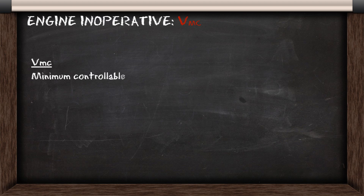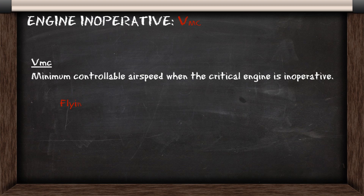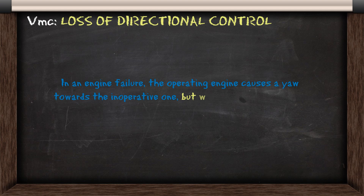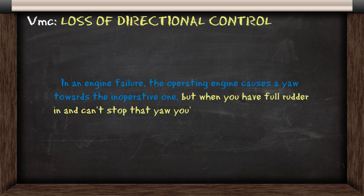VMC is the minimum controllable airspeed when the critical engine is inoperative. If you're flying below VMC, this will result in a loss of directional control. In an engine failure, the operating engine causes a yaw towards the inoperative one, but when you have full rudder in and you can't stop that yaw, you've lost directional control.